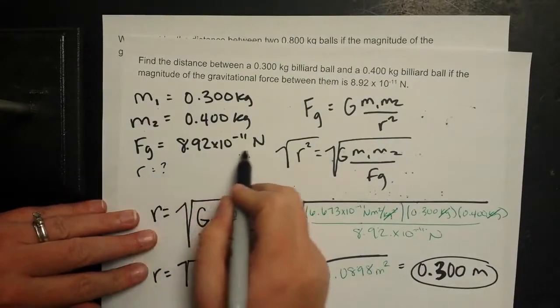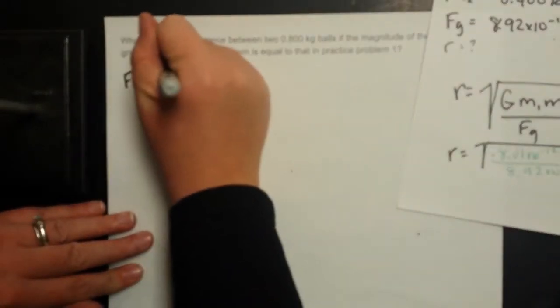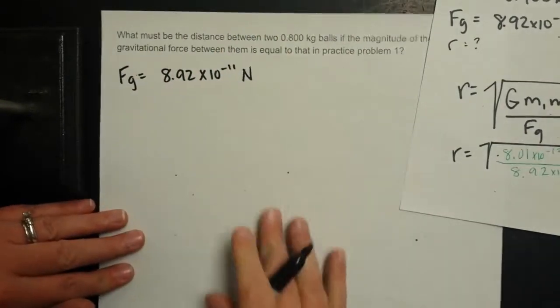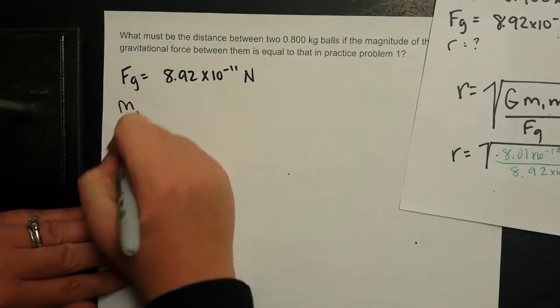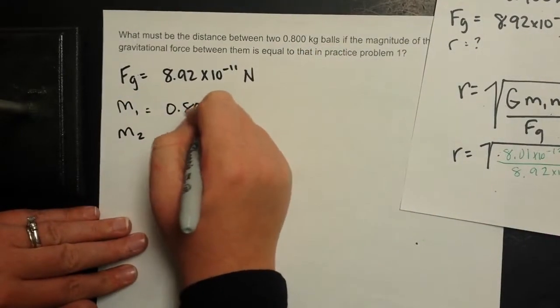So we're going to take the same gravitational force here. Fg is still 8.92 times 10 to the negative 11th newtons. But now both of our masses are going to be 0.8 kg.